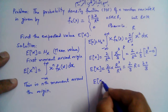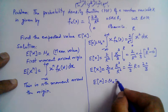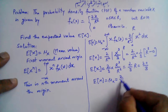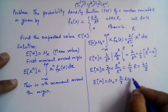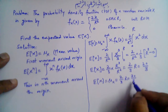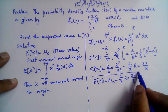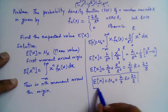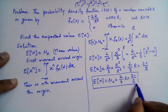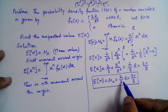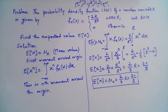The expected value, or mean value of x, is 20 over 3. This is the first moment around the origin. This completes the solution to the given problem.